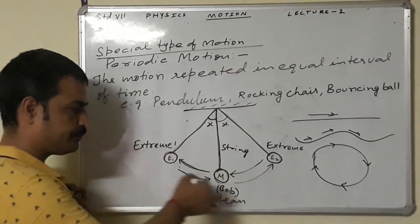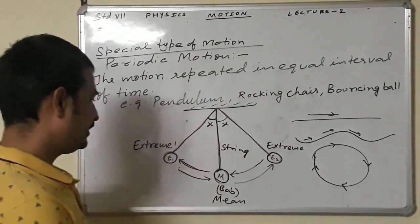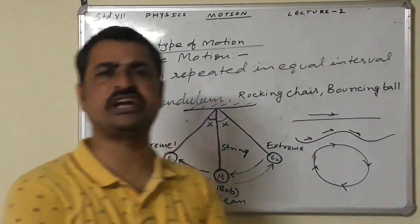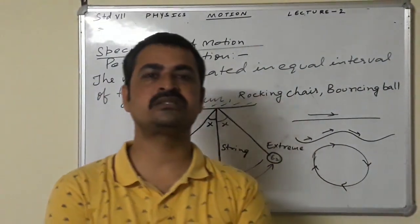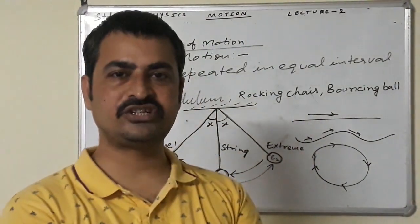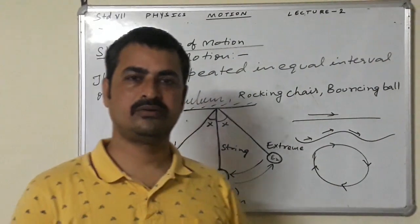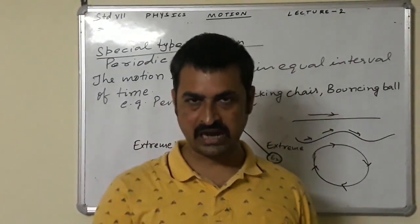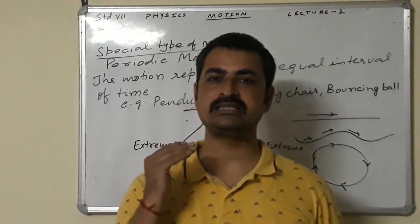In periodic motion, the same motion is repeated continuously. You must have seen a rocking chair — for kids or old-age persons, we have rocking chairs on which we sit and move back and forth. Another example is a bouncing ball: the ball is dropped down, it comes back, goes down again, it comes back. This motion is known as periodic motion.